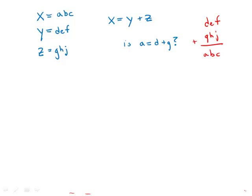We'd like to know: in the hundreds column, is it just true that d plus g equals a? Well, of course, that's going to depend on whether we're carrying a number from the tens column. In other words, if e plus h is greater than 10, then we carry a number, and a would equal d plus g plus 1. If e plus h is less than 10 and nothing is carried, then we would have it that a equals d plus g.